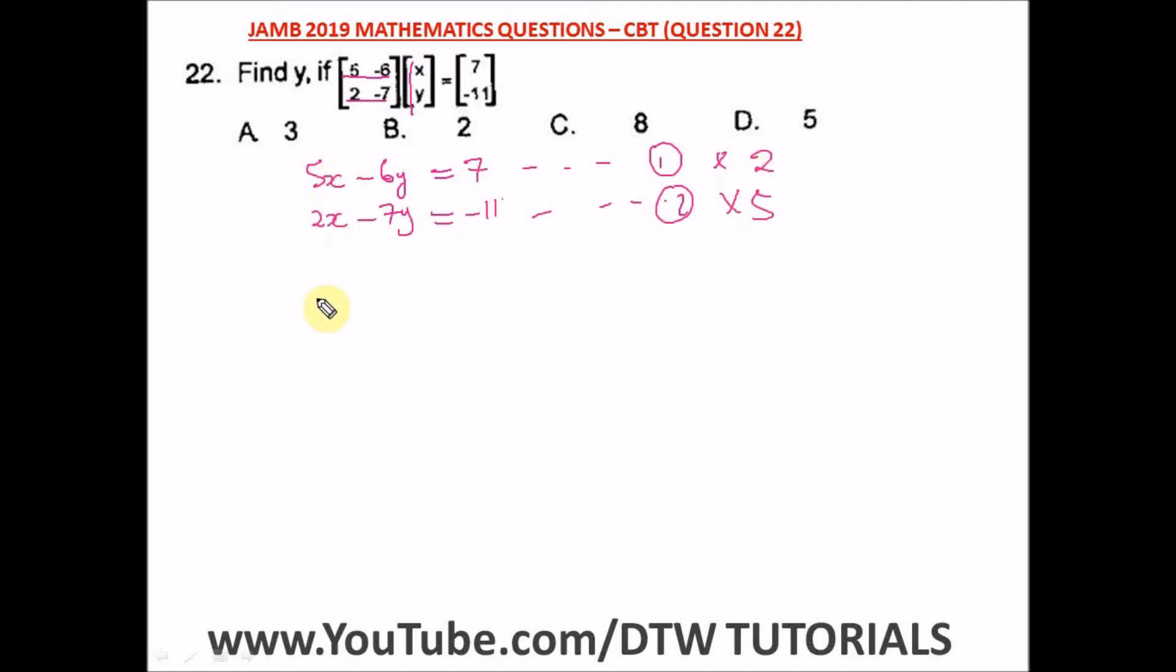2 times 7 equals 14. So we have 10x - 12y = 14. Then 5 times -11 gives us -55. So 10x - 35y = -55.